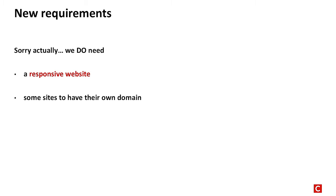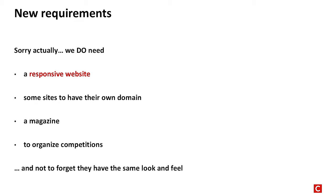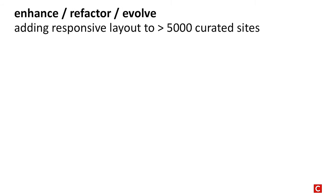We also needed some sites to have their own domain, needed a magazine, needed to organize competitions — and all of this has to have the same layout, design, and consistent flow. So how did we do this? Adding responsive layout to about 70,000 pages with more than 5,000 curated sites — fixing the layout was actually not the big thing. It was a minor issue because we had anticipated it would come, so we only had to do some refactoring. But a major issue was: what do we do with the manually selected images?